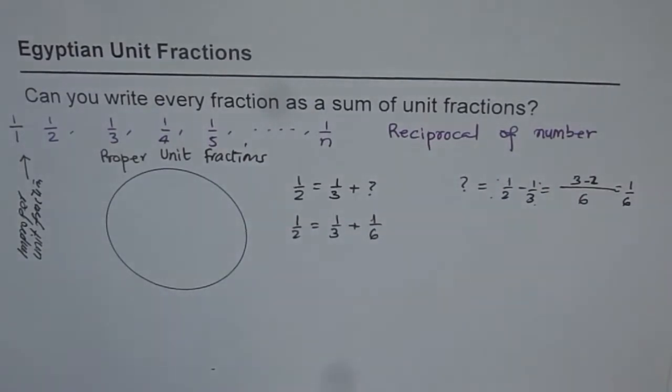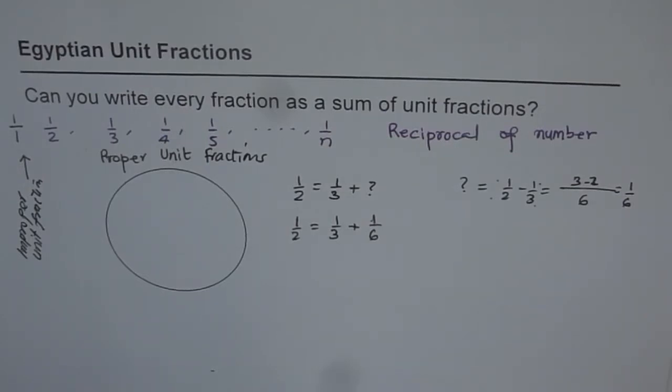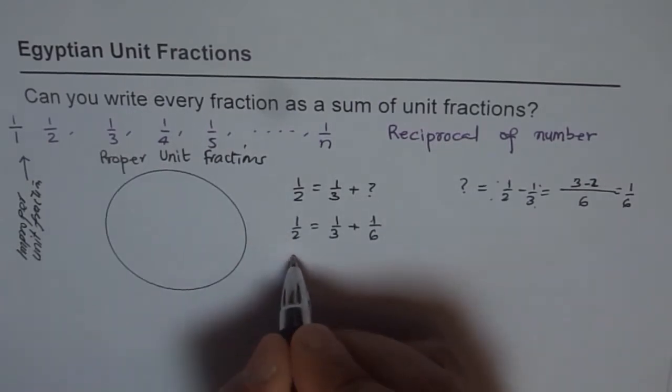So I can write half, which is itself a unit fraction, as sum of two other unit fractions. Do you see that? That's interesting. Can I do that with all of them? Let me check. Now this time, let me try with one third.